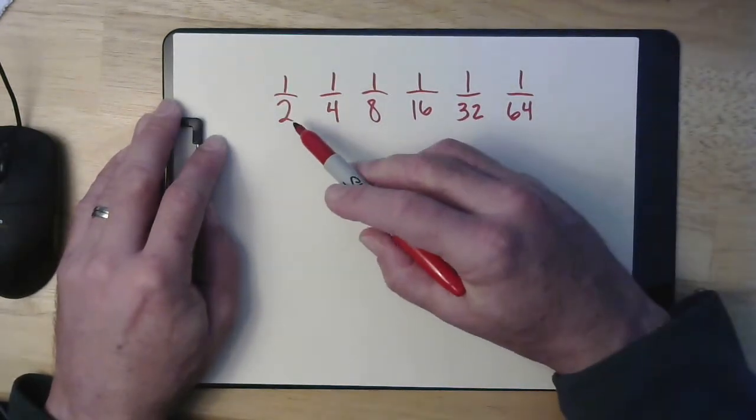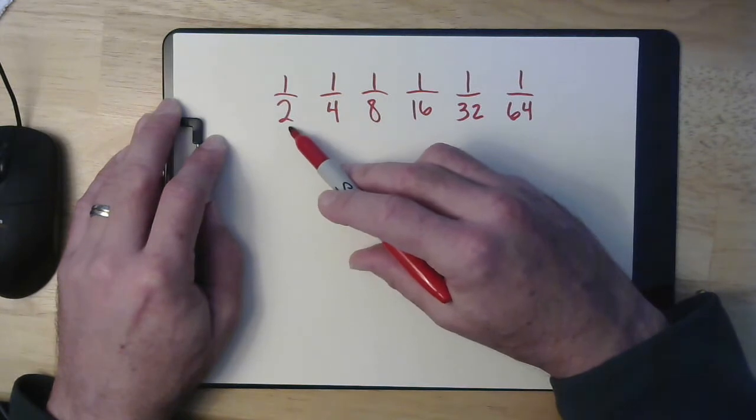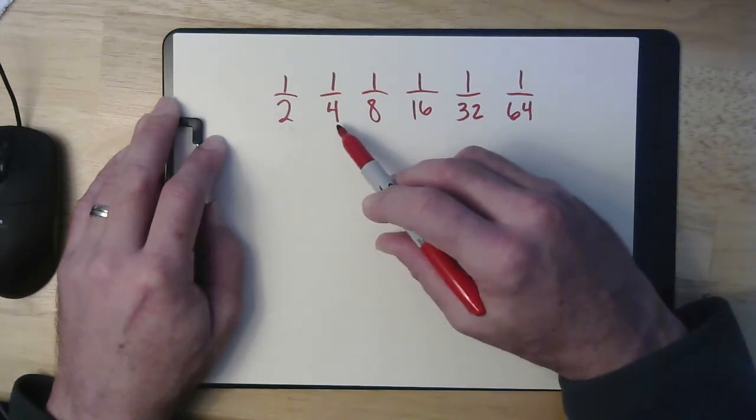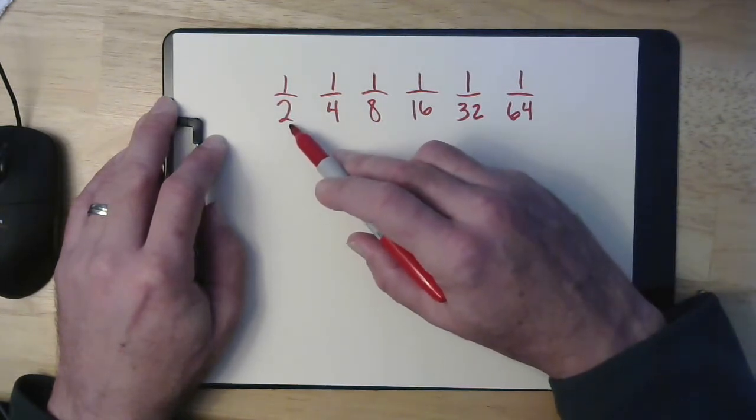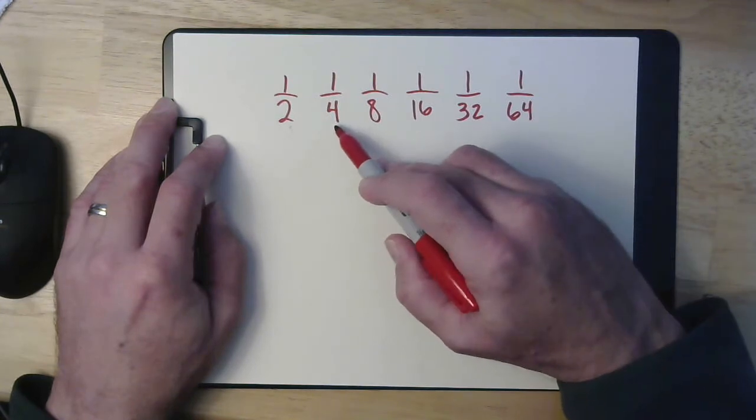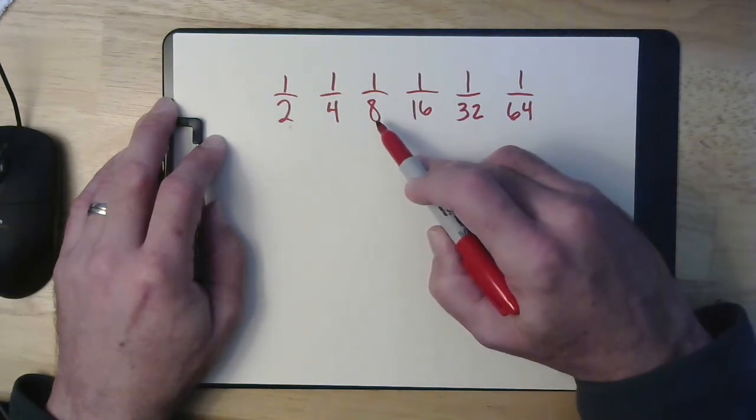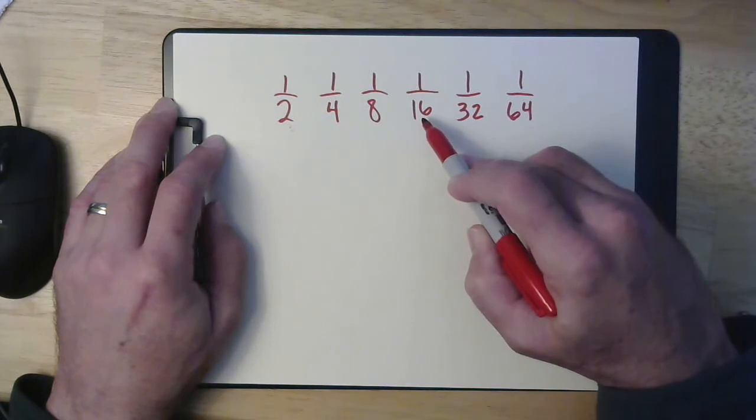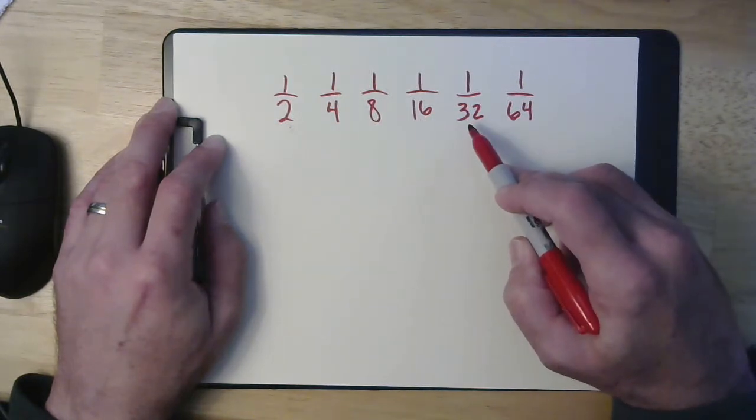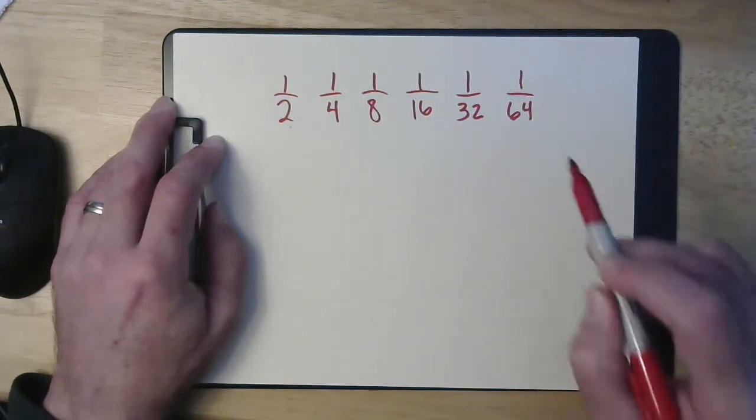So look what you notice here about these bottom numbers. So they go up by a factor of 2. In other words, if I multiply 2 by 2, I get 4. Multiply that by 2, I get 8. Multiply that by 2, I get 16. By 2, I get 32. And by 2, I get 64.